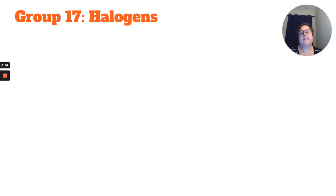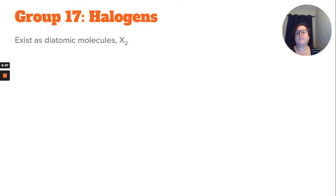Now we're going to look at some chemical properties of our halogens, which are group 17. Halogens exist as diatomics: F2, Cl2, Br2, and I2. They're four of our seven diatomics.